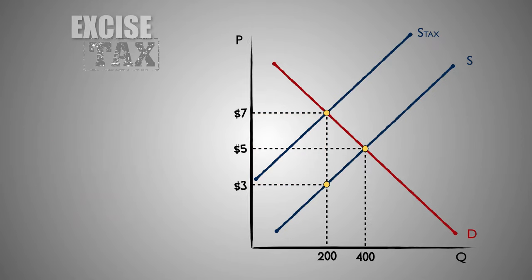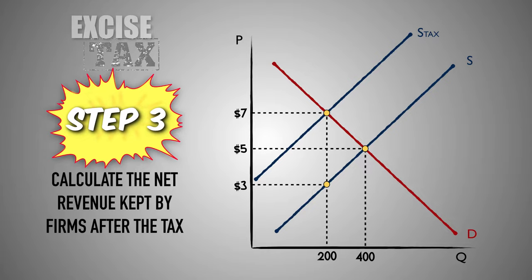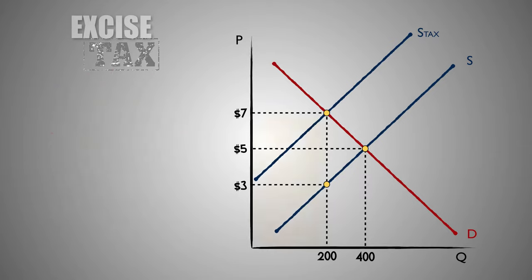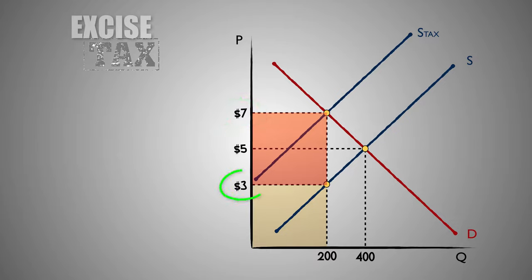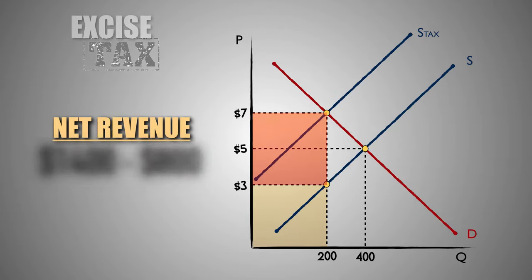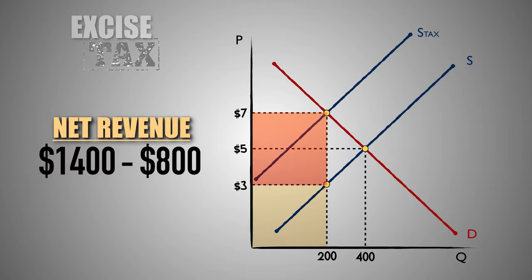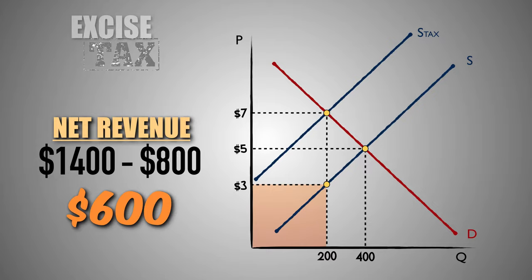Step 3: We can calculate the net revenue kept by firms after they pay the government the tax revenue they owe for producing Good C. When selling 200 units of Good C at a price of $7, firms earned a total revenue of $1,400. However, firms owe $4 for every unit of Good C produced, so they owe $800 in tax revenue to the government. While firms sold each unit at a buyer's price of $7, they only keep a seller's price of $3 per unit after paying the $4 per unit owed in taxes. In all, subtracting the $800 in total tax revenue from the $1,400 earned, firms will keep a net revenue of $600 after paying taxes.